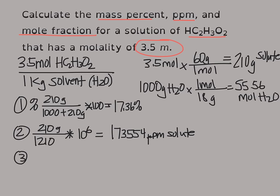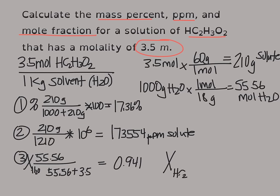My last problem is mole fraction, and we'll solve it for both. The mole fraction for the water: we'll take our 55.56 moles divided by the sum of both sets of moles, 55.56 and my 3.5, and I get a mole fraction of water of 0.941. My mole fraction for the acetic acid HC2H3O2 would be 1 minus my 0.941, which is 0.059.